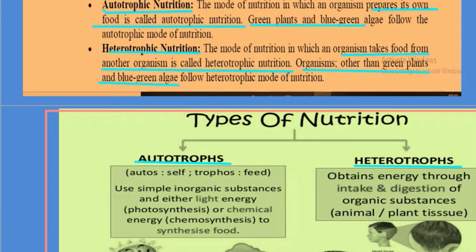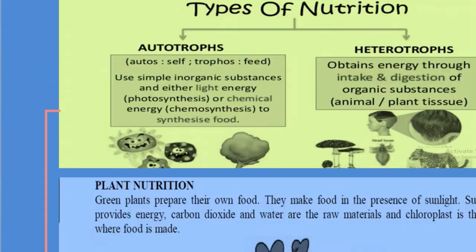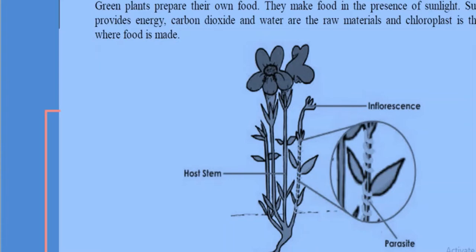Next is plant nutrition. Green plants can make their food in the presence of sunlight, using carbon dioxide and water as raw materials. But sometimes you may have seen other plants growing over green plants — these are called parasites. They are not exactly green; they just take food from their host plant. One example of a parasite is Cuscuta, also called Amarbine.